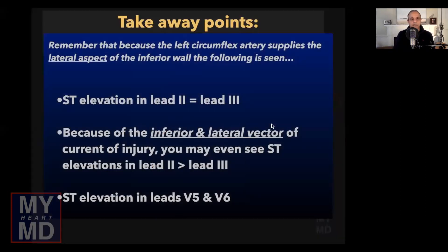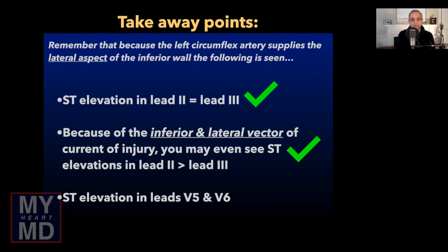The key takeaway from this case is that the left circumflex artery supplies the lateral aspect of the inferior wall. Because of that, you see three things: ST elevations in lead II equal to or, as in this case, greater than lead III, because the net current of injury is in the inferior and lateral aspect. In conjunction with ST elevations in precordial leads V5 and V6, this is quite concerning for an infralateral STEMI most likely due to a circumflex occlusion.